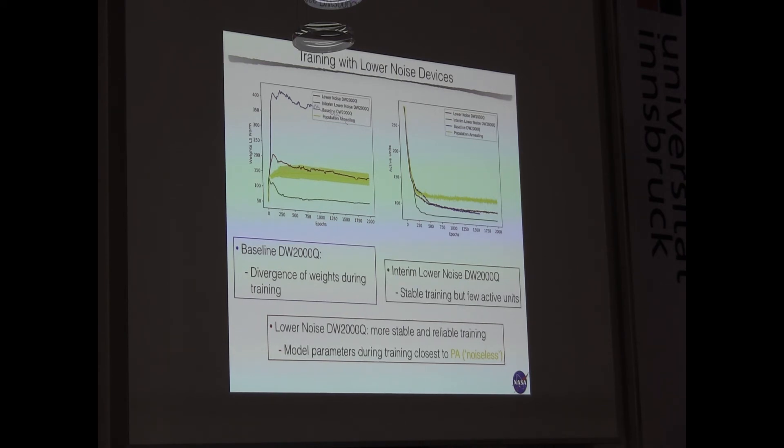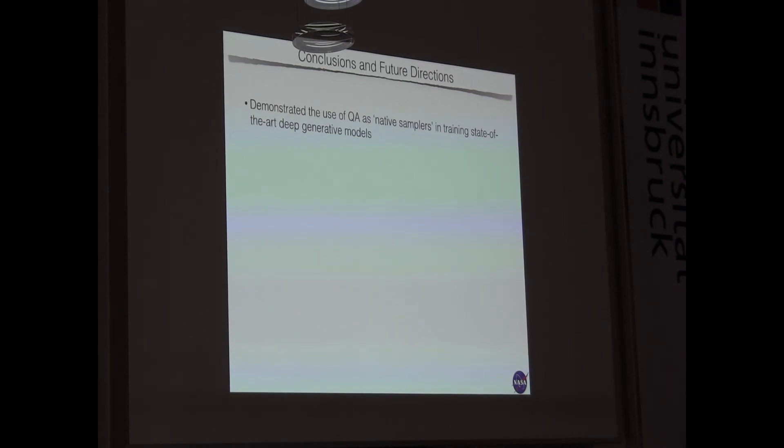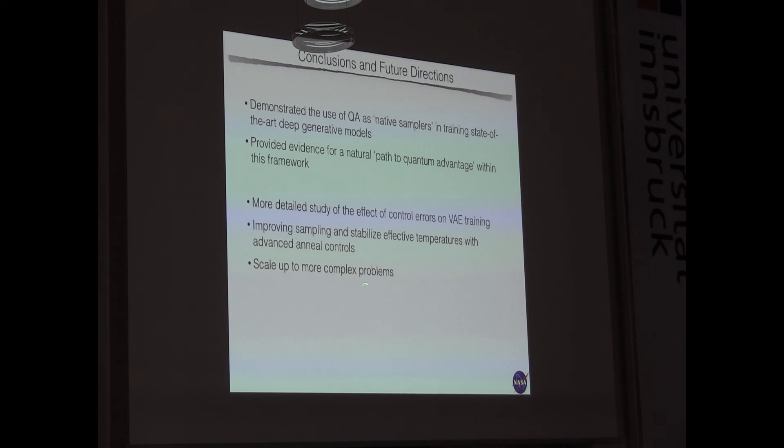And so, we also studied noise and we see that training is more stable with lower noise devices, which is the red one. And to conclude, I think there is good evidence that we can use quantum annealers as native samplers to train state-of-the-art deep generative models. And we can see a path towards achieving quantum advantage by exploiting larger and larger RBMs. And in the future, we need a more detailed study of how control errors affect training, to improve sampling and effective temperatures with advanced anneal control. And of course, scale up to more complex problems, do supervised or semi-supervised learning, and also hybridize other generative models.